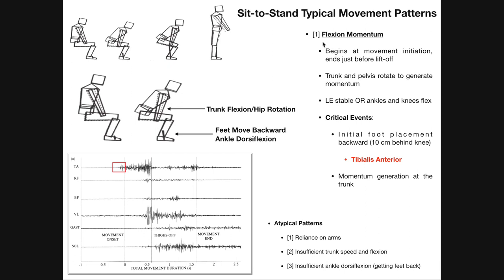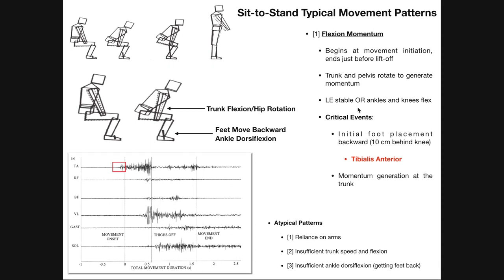We'll begin with the first phase of the sit-to-stand: flexion momentum. This is where the person begins at rest in a seated position. This phase begins at movement initiation — practically at rest — and ends just before lift-off. By lift-off, we mean the moment that your buttocks and thigh come off of the seat.